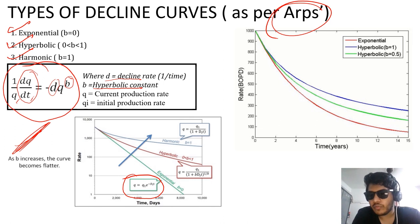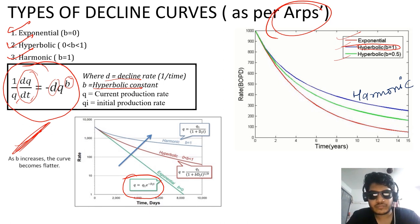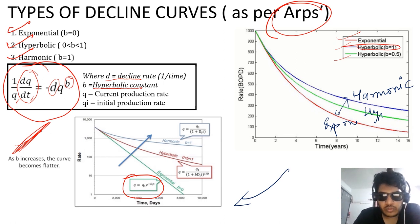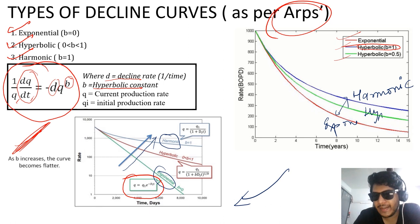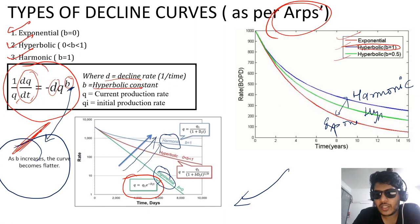As discussed by Arps there are three decline curves — exponential, hyperbolic, and harmonic. The blue one is harmonic, the red one is exponential, and the green one is hyperbolic, which lies in the range between zero and one. One peculiar thing to notice: as we go from exponential to harmonic, the decline rate is comparatively less. As the value of b increases, the curve becomes flatter.